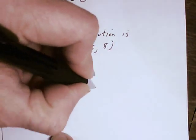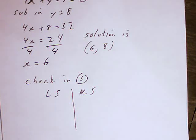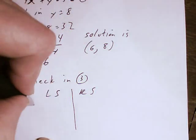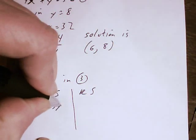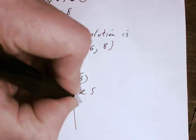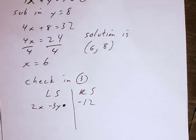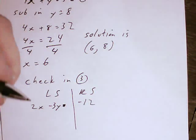Left side, right side, check. So I've got 2x minus 3y equals negative 12. I'm going to sub in my x and my y.